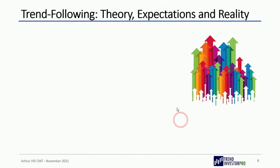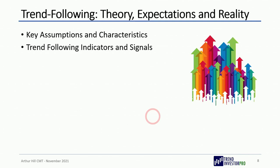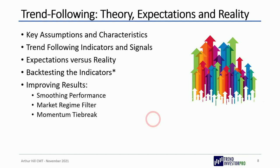Here's what we're going to cover today. The slides are numbered at the bottom right so you can refer to specific slides with questions. We'll start with key assumptions and characteristics of a trend following strategy, then the indicators and signals, then expectations versus reality based on an equity curve over a 20-year period, then back test those indicators, and finally show how to improve results with smoothing, a market regime filter, and a momentum tie-break. Remember: past results do not guarantee future results.